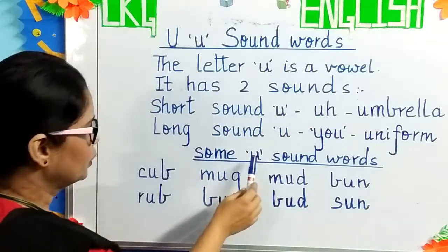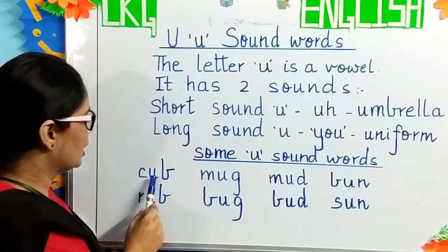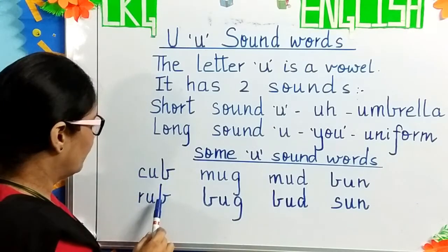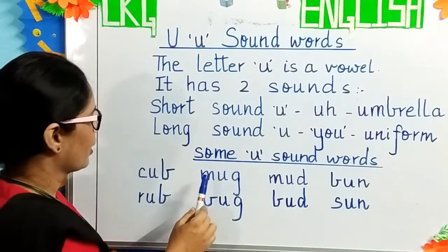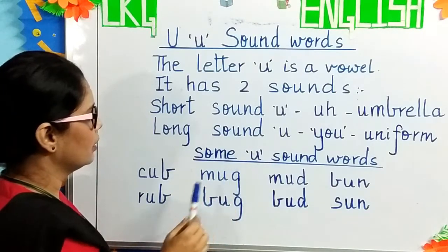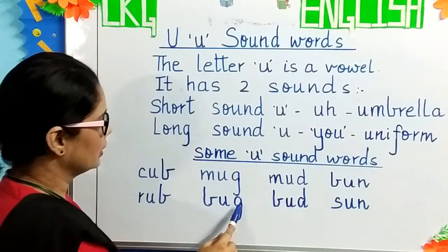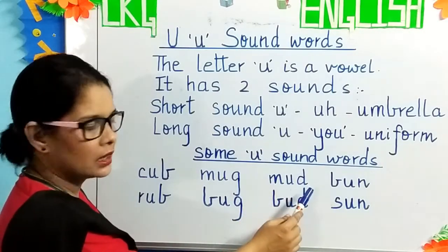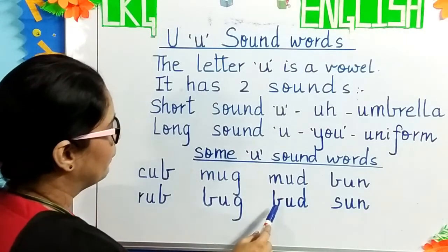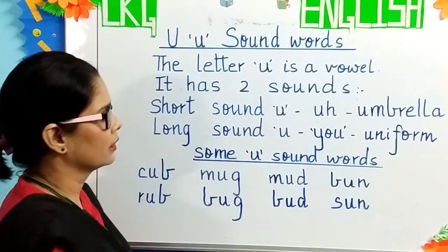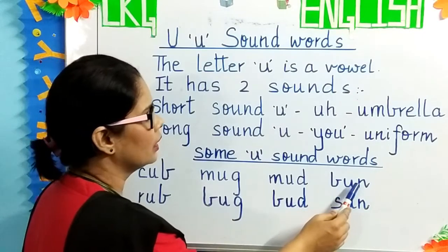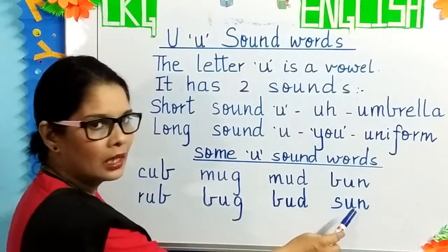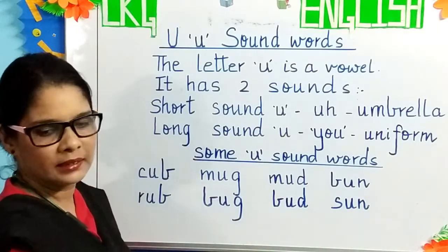Some U sound words are: K-A-B, kab. R-A-B, rab. M-A-G, mag. B-A-G, bag. M-A-D, mad. B-A-D, bad. B-A-N, ban. S-A-N, san.